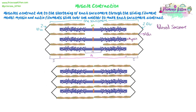At the top we have our labelled relaxed sarcomere, the kind of diagram we had in the previous video where we looked at the structure of muscles. We need to think about what it would look like when contracted. The sarcomere at the bottom is the contracted sarcomere and we need to be able to spot the differences between them in order to explain how we know that sarcomere has contracted.